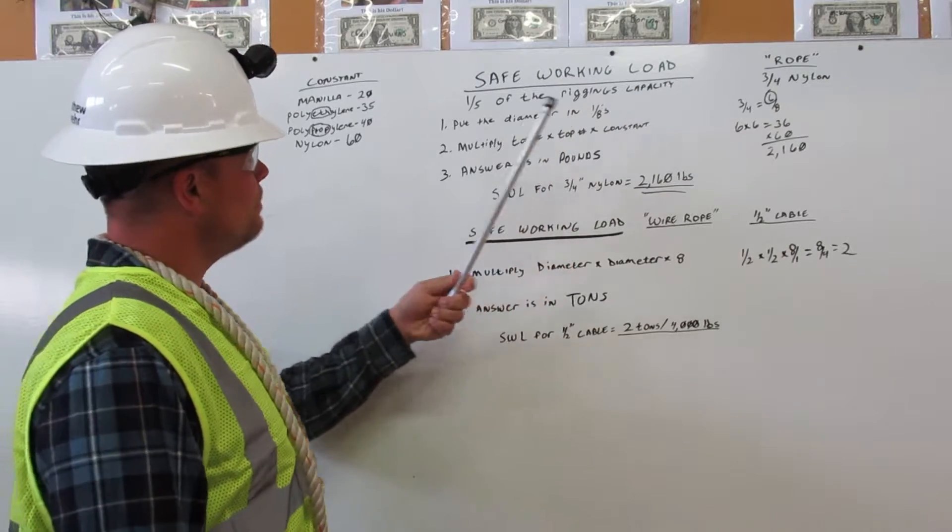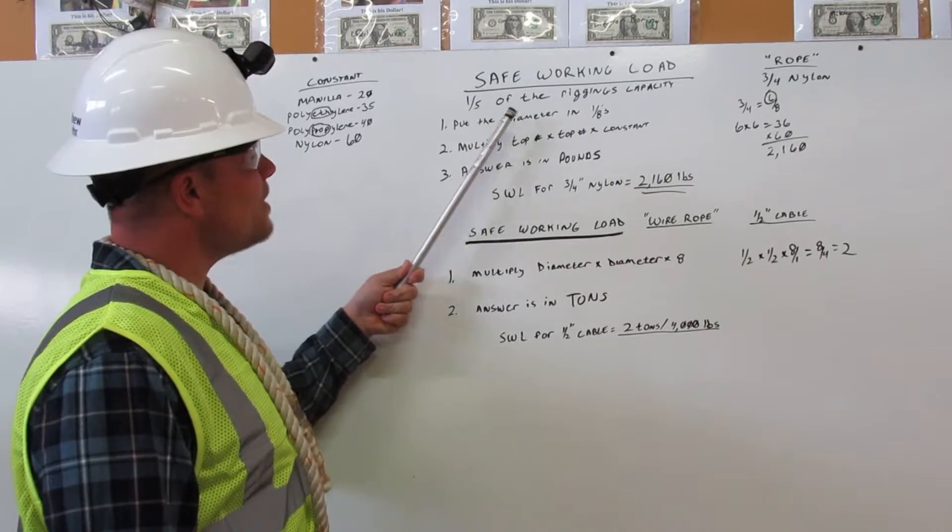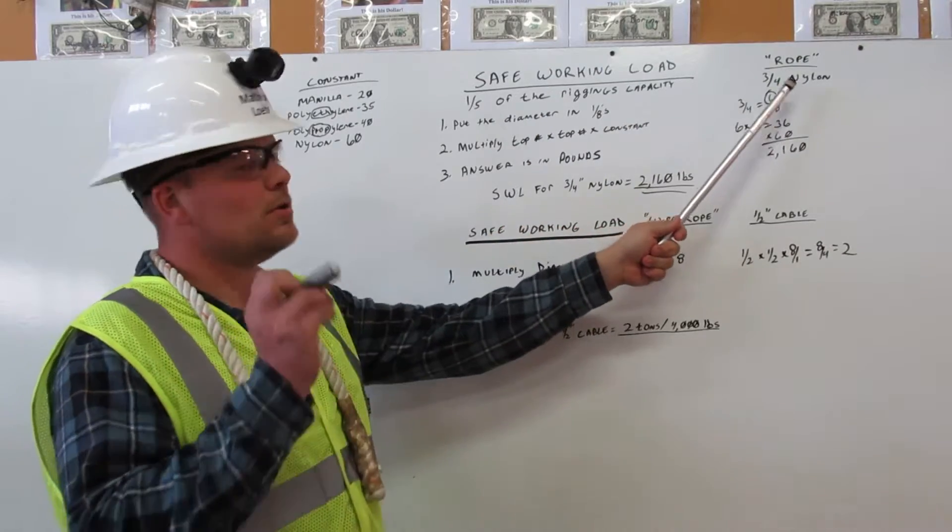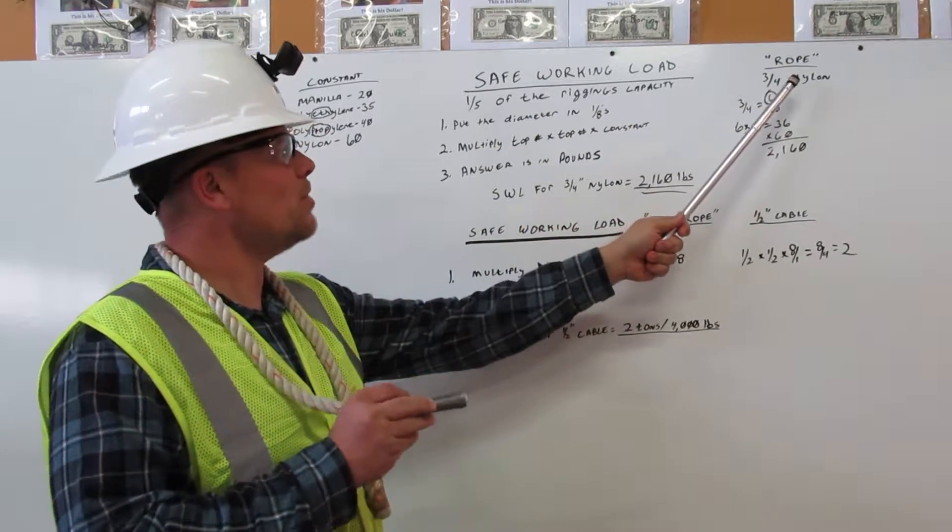Safe working load. Again, that is one-fifth of the rigging's capacity. For this example, we are using three-quarter inch nylon rope.